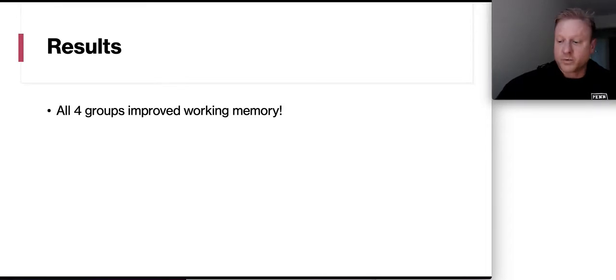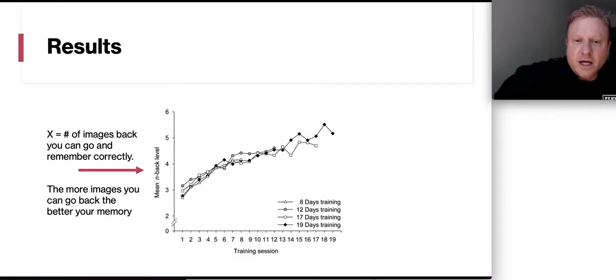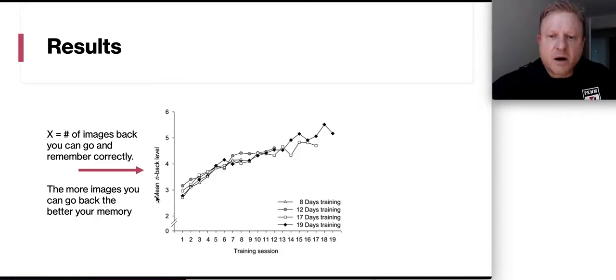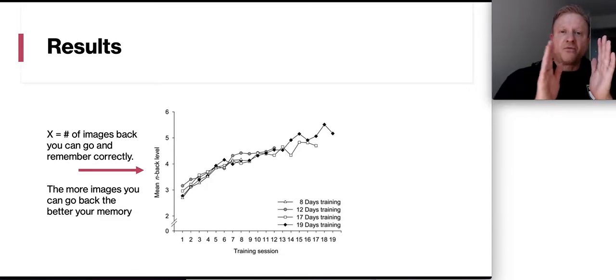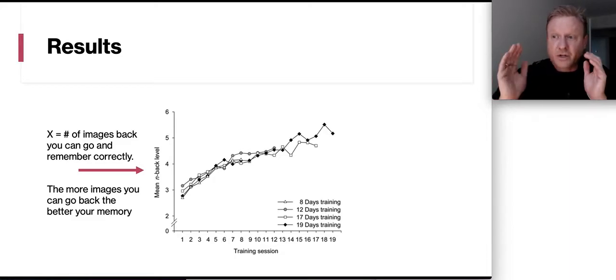So the good news is all four groups improve the working memory. Now you can take a look here at x. Now x means the number of boxes you would go back before you saw a repeat. So this number six means they would show you the stimuli and then they would have five boxes ahead of it that didn't match. But then the sixth one matched. So you had to remember those five in between and remember the box one and box six. So the more you had, the more ends you had, the harder it became. And you take a look at these different graphs here. This is based on the number of training days. And what you can see is that they got smarter over the training session. So from the first training session to the 19th, they were able to remember three boxes back. And now it goes up to almost doubling between the five and the six. So the interesting thing is everyone got better.